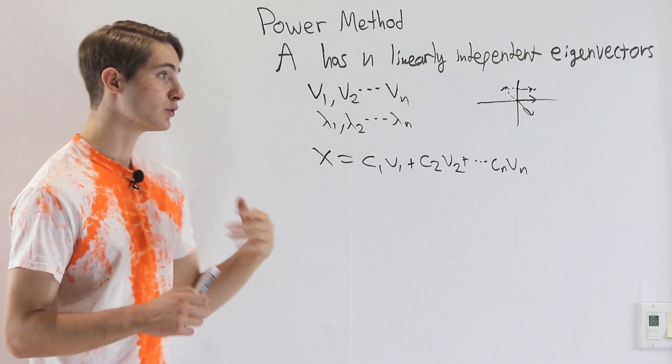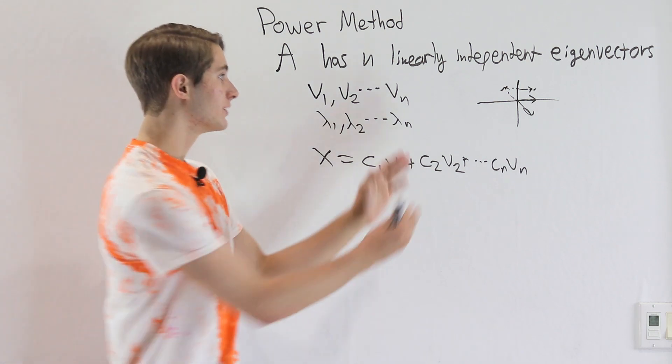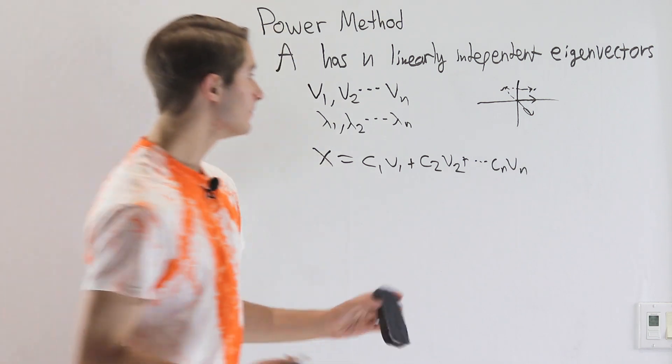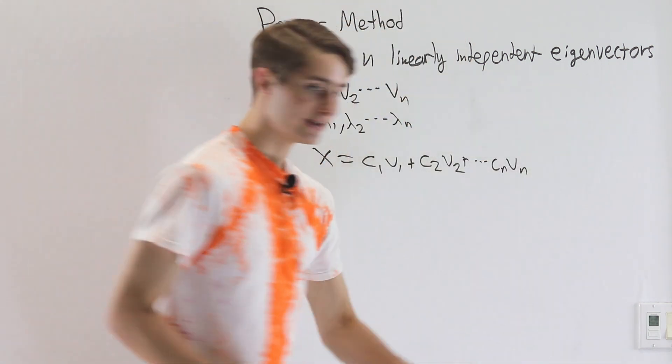So even though our vectors aren't the normal 1, 0 and 0, 1, we can reach any point in space using just two vectors. So that's the reason we want n linearly independent eigenvectors.